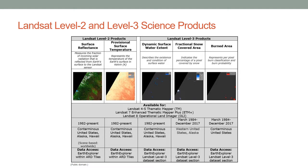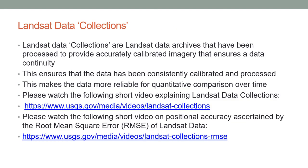Landsat Level 3 products include dynamic surface water extent, fractional snow-covered area, and burned area. You also need to be aware of the Landsat Data Collections, which are data archives processed to provide accurately calibrated imagery ensuring data continuity. Data continuity means the data has been consistently calibrated and processed, making it more reliable for quantitative comparison over time. Please watch the following short videos explaining the Landsat Data Collections and how positional accuracy of Landsat imagery is ascertained using the Root Mean Square Error, or RMSE.